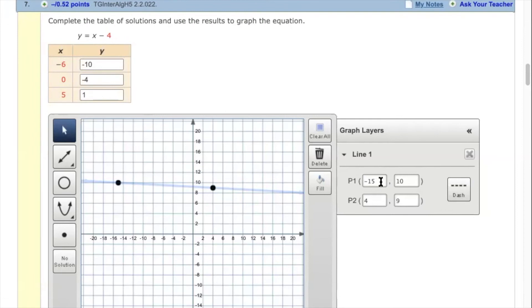I'm going to go ahead and type in negative six. Oh, this one was already 10. Nice. Negative 10. And then zero.